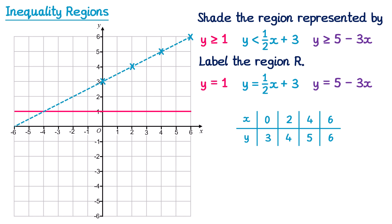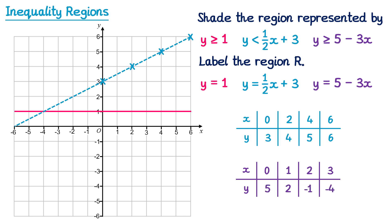For the final line y = 5 − 3x I use a table of values with x = 0, 1, 2, 3, giving y values of 5, 2, −1, −4. I plot (0, 5), (1, 2), (2, −1), and (3, −4). This inequality was ≥, so I draw a solid purple line through these points.